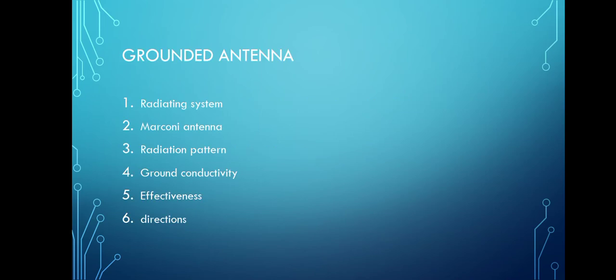The next topic is the grounded antenna. In the grounded antenna, the directed ray is reflected similarly to the ungrounded antenna, because the earth still acts as a mirror image. The earth becomes part of the radiating system. If an antenna is grounded, the earth still acts as a mirror and becomes part of the radiating system.